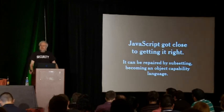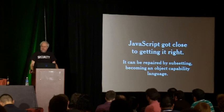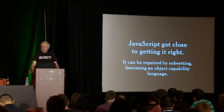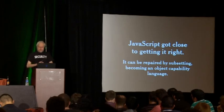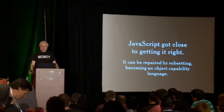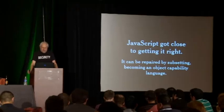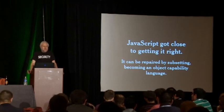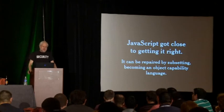JavaScript gets beat up a lot for its security problems, but JavaScript actually got close to getting it right. It can be repaired by subsetting, becoming an object capability language, and once it becomes that we have a platform for developing secure applications. There are other languages which can't do that. Java got some early fame as a secure language but was never able to demonstrate it — client-side Java's principal role now is as an attack vector. It didn't work. But JavaScript can become a secure language not by adding more to it, but by removing some of the bad parts.